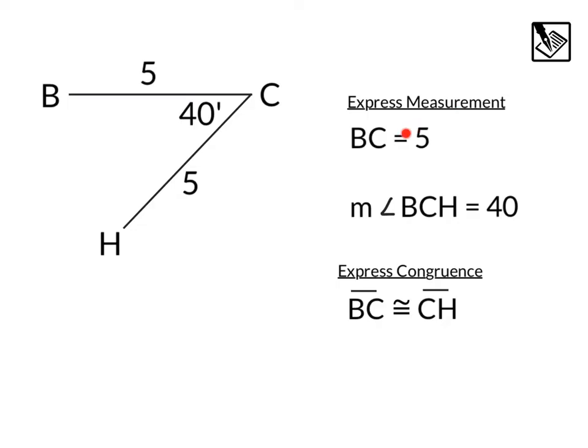In math, there is a difference between expressing measurement and expressing congruence. We can see that side BC has a measurement of five. To express that measurement, we don't use the line segment symbol, we just say BC equals five. Same thing for angles. This angle has a measure of 40 degrees, so we say M angle BCH equals 40. When discussing measurement, we don't use the congruent symbol, just equals. On the other hand, CH also equals five, so we can say that line segment BC is congruent to line segment CH.